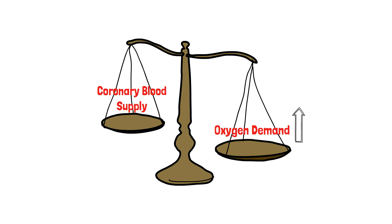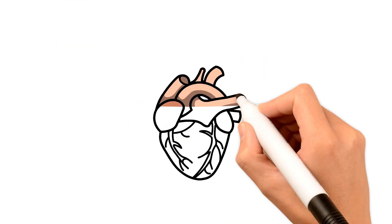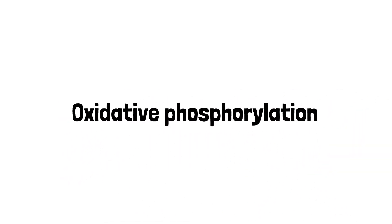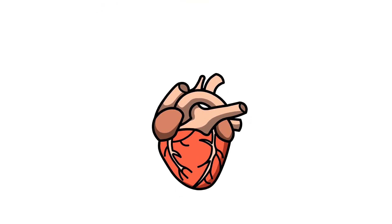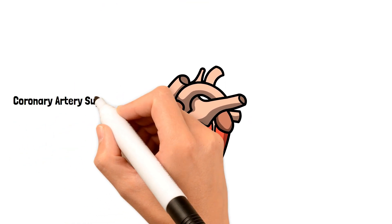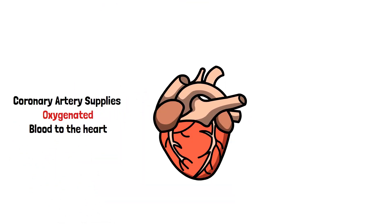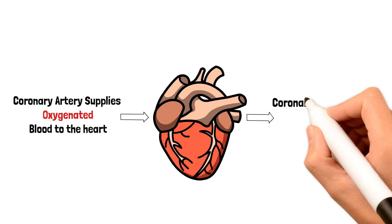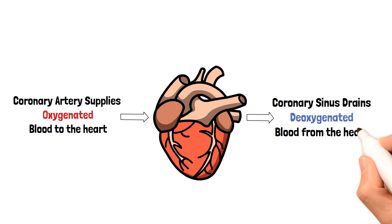The myocardium is composed of myocytes which generate energy exclusively through oxidative phosphorylation. The coronary artery is the artery that supplies oxygenated blood to the heart, and the coronary sinus is the vein that drains deoxygenated blood from the heart. Let's take a brief look at the anatomy of the blood supply to the heart.